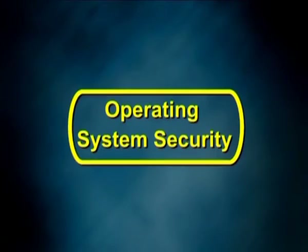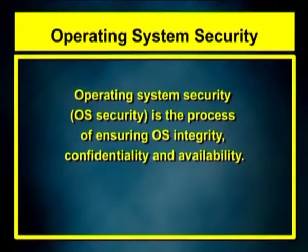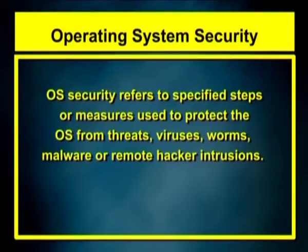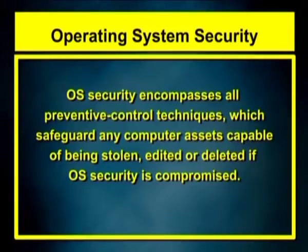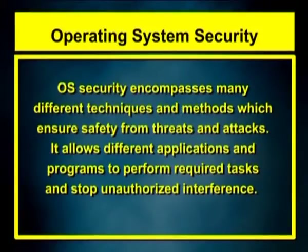So these are some of the properties of operating system. Now we know what operating system is and what it does, and we also now know different types of operating systems. Now let us move on to operating system security. Operating system security is the process of ensuring operating system integrity, confidentiality and availability. It refers to specified steps or measures used to protect the operating system from threats, viruses, worms, malware or remote hacker intrusions. Operating system security encompasses all preventive control techniques which safeguard any computer assets capable of being stolen, edited or deleted if operating system security is compromised.